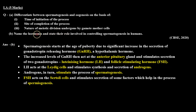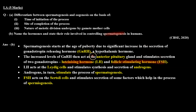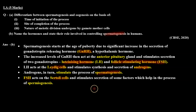Part B mein hume hormones ka role aur name batana tha spermatogenesis mein. Unka name hai luteinizing hormone and follicle stimulating hormone. Ye release hota hai anterior pituitary se jab GnRH anterior pituitary pe act karta hai. Uske baad jo LH hota hai woh Leydig cells pe act karta hai, jo synthesize aur secrete karta hai androgens, aur androgens stimulate karte hain spermatogenesis. Phir FSH Sertoli cells pe act karta hai aur woh factors release karta hai jo initiate karta hai spermiogenesis.